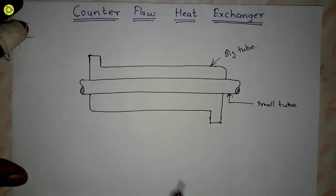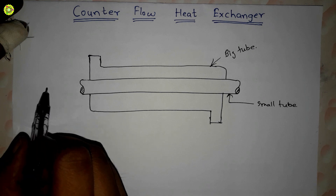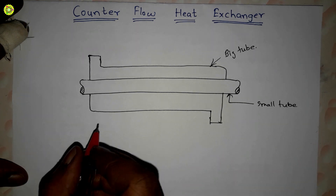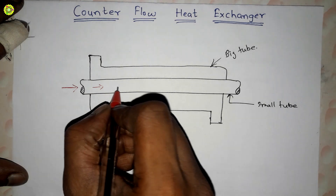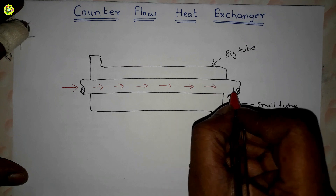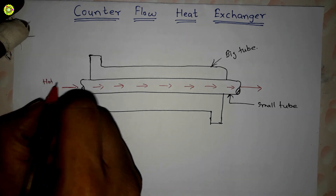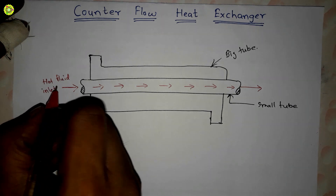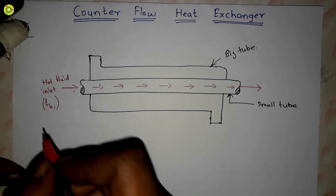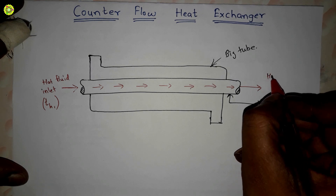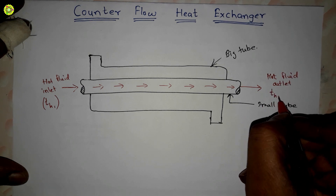Now suppose we are passing a hot fluid from this small tube, flowing from left to right. This is the hot fluid inlet, and at this point it has temperature th1. At the other end, this is the hot fluid outlet and it has temperature th2.